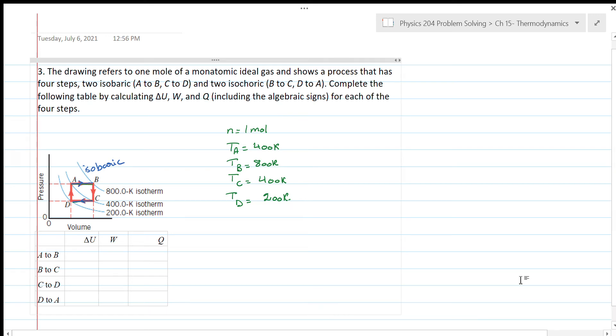All right, so in this problem we have this graph of the processes that one mole of a monoatomic ideal gas undergoes. We can see we have four steps in this process: two of them are isobaric, which are from A to B and from C to D, and two processes which are isochoric, which are from B to C and from D to A.